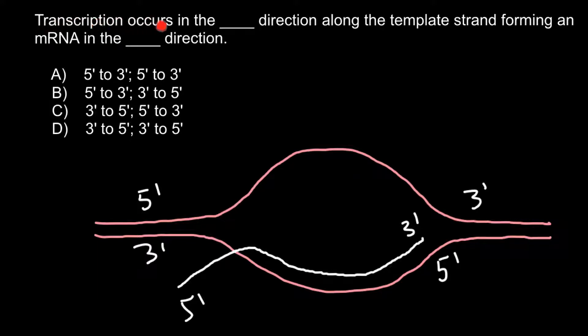question: transcription occurs in the 3 prime to 5 prime direction along the template strand of the DNA,